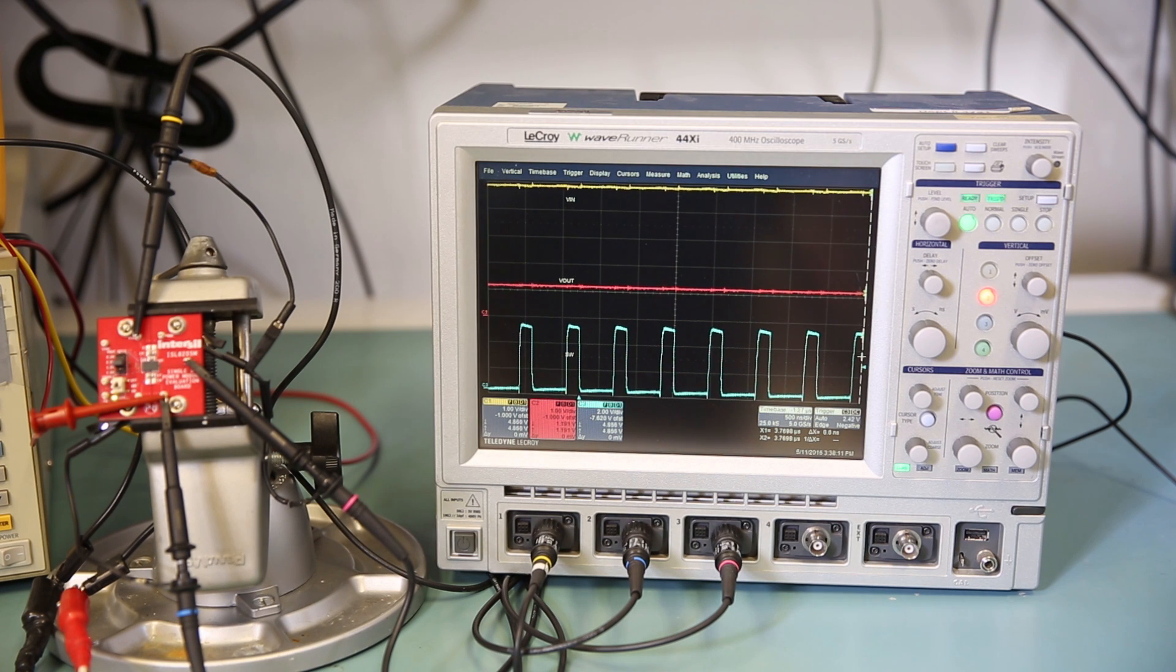Here on the scope, we have three informations: the input voltage currently sitting at around 5 volts, the output voltage 1.2 volts, and the switching node underneath.